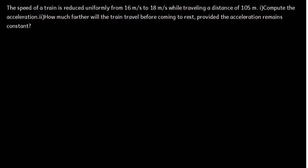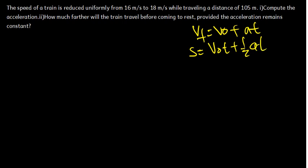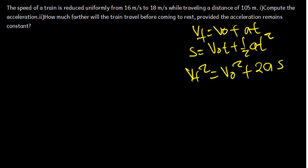The most important thing we have to know under kinematics is that we have three main equations. The first formula is: final velocity equals initial velocity plus acceleration times time. The second is: displacement equals initial velocity times time plus half times acceleration times time squared. The third formula is: final velocity squared equals initial velocity squared plus 2 times acceleration times displacement.